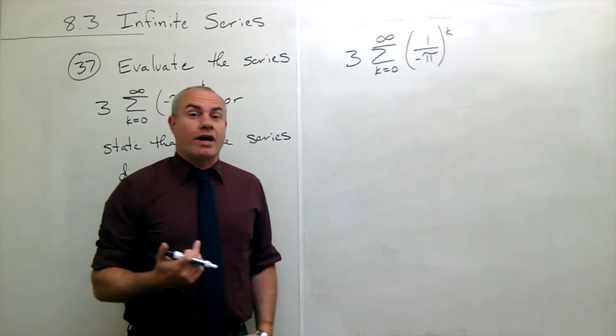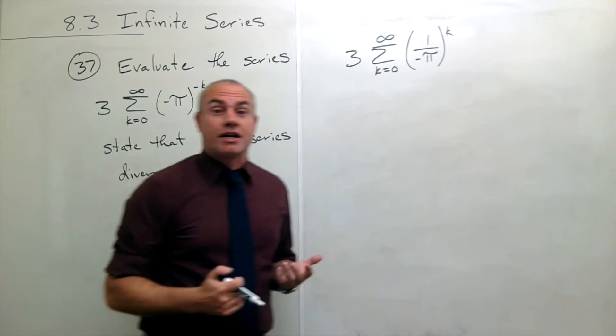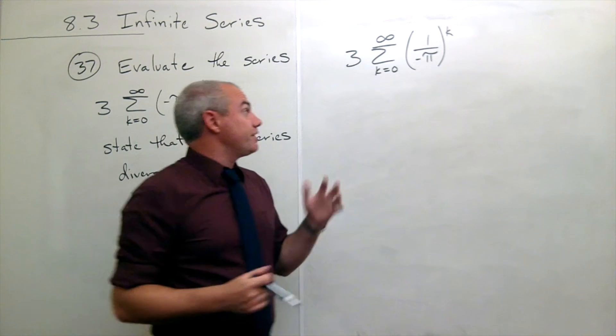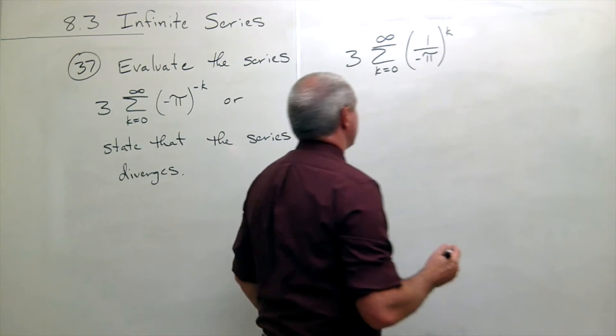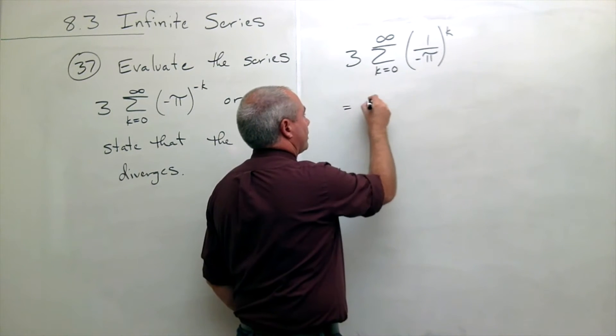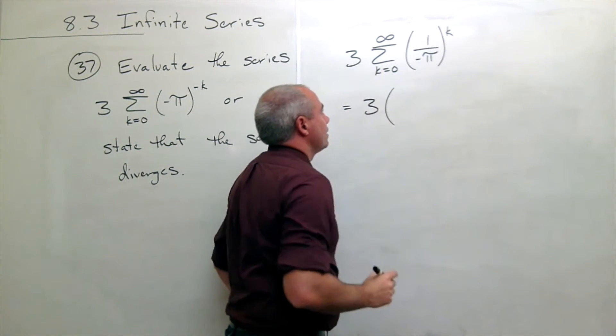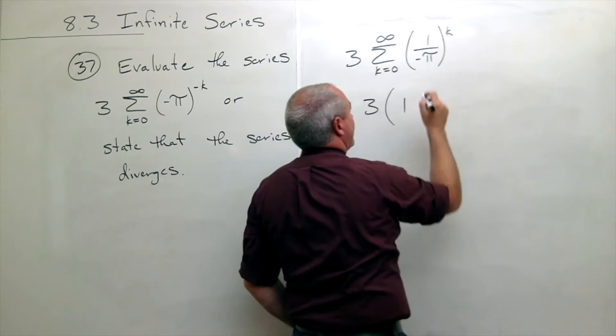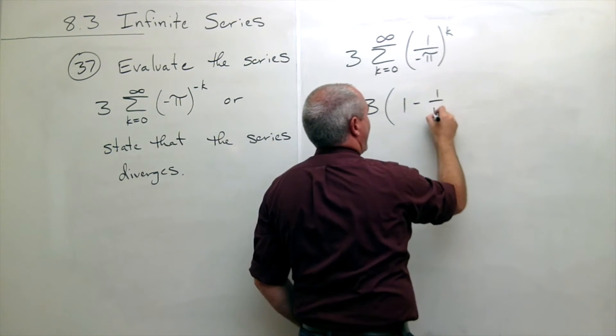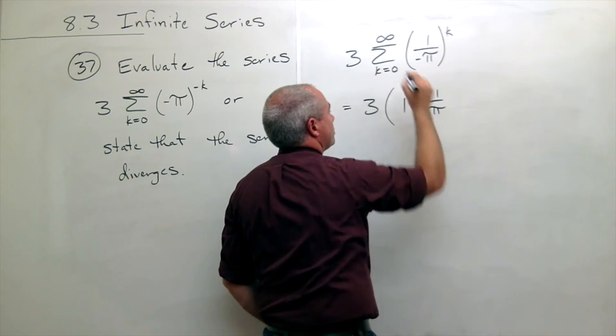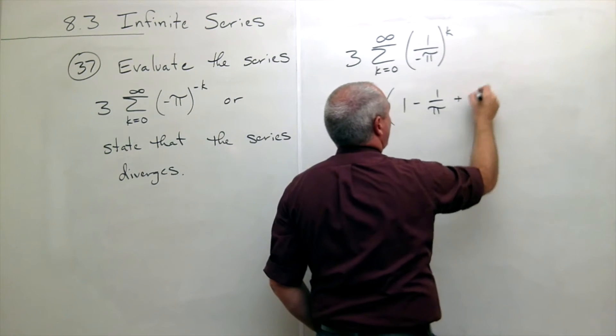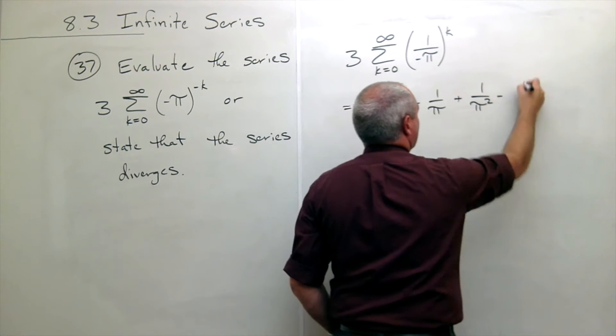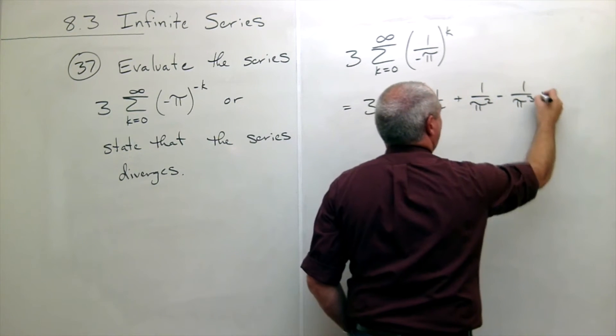I think in this way it's easier to see that this thing actually does converge. If you want to be a little bit more clear on this you could write out a few terms of this thing, because this is something like 3 times, well if k was 0 I get 1, if k was 1 I get minus 1 over π, if k was 2 I get plus 1 over π squared, minus 1 over π cubed, and so on.